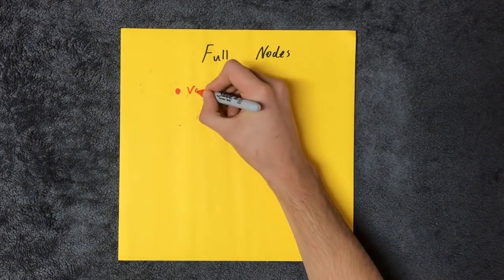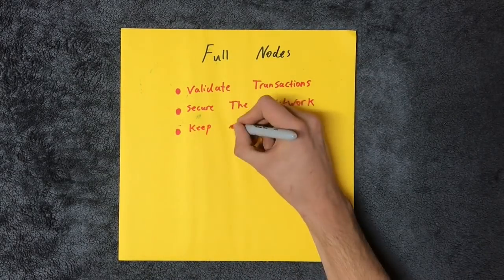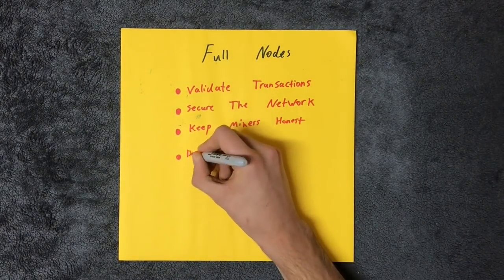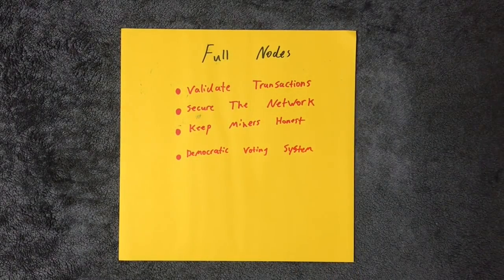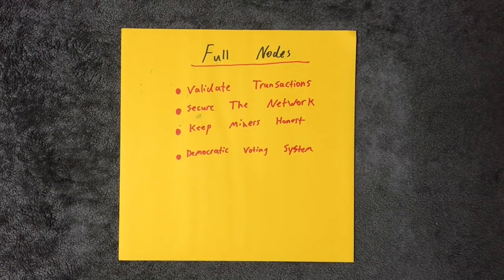You often hear that nodes validate transactions, keep the network secure, keep miners from changing the protocol to their benefits, or are the integrated voting mechanism of Bitcoin. But this is only true for full nodes. That is, a node that has hash power behind it.